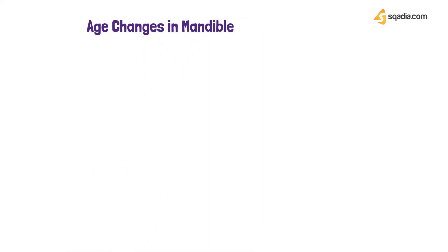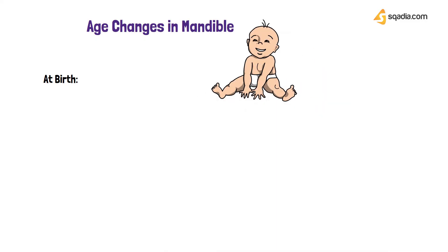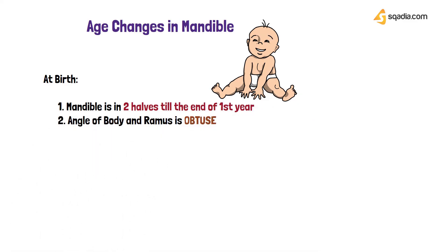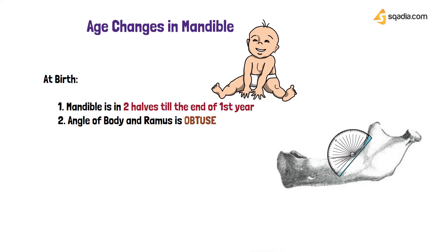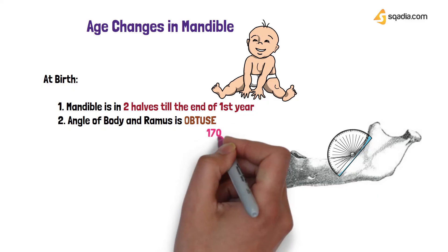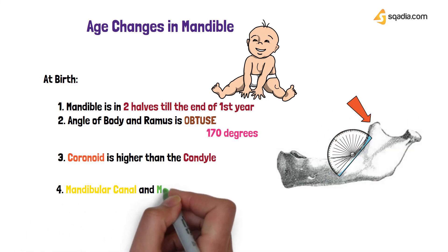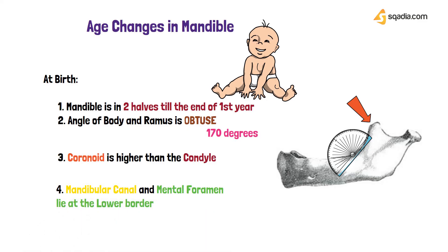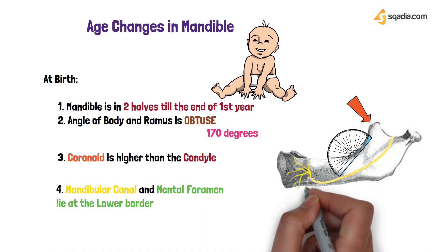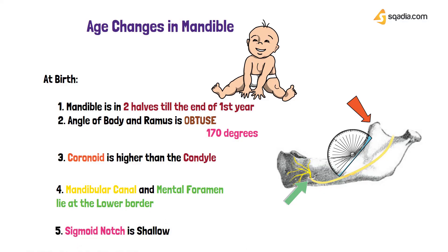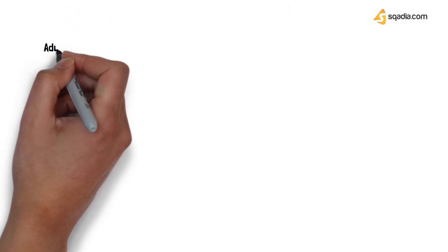At birth, the mandible is present in two halves — a fibrous cartilage that ossifies at the end of the first year. The angle of the body and ramus is obtuse, around 170 degrees. The coronoid is higher than the condyle. The mandibular canal and the mental foramen lie at the lower border of the mandible because there are no teeth yet. The sigmoid notch is shallowest at this time.